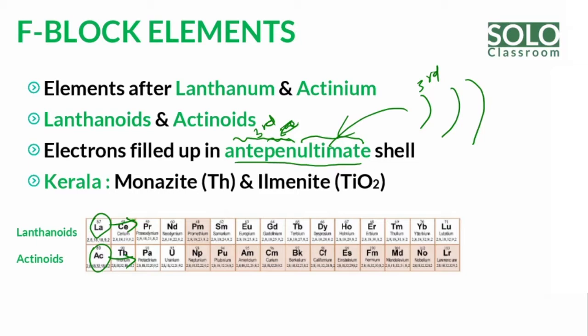In the case of Lanthanoids, they occur in minerals called Monazite and Ilmenite. From Monazite and Ilmenite minerals, we extract Titanium Dioxide. In the case of nuclear reactors, Actinoids are used as fuel.